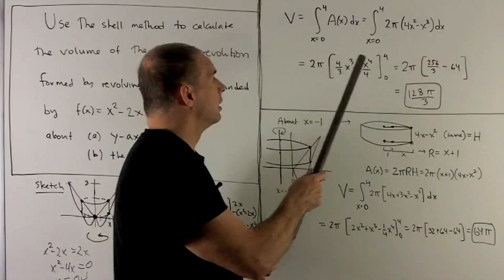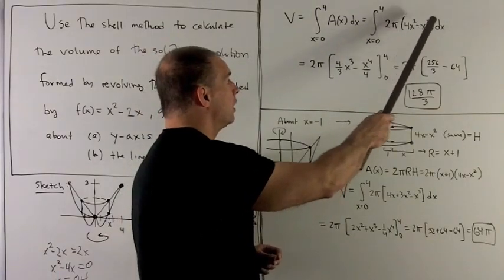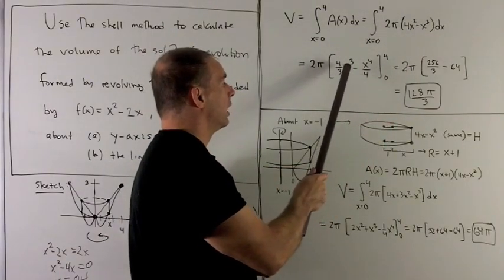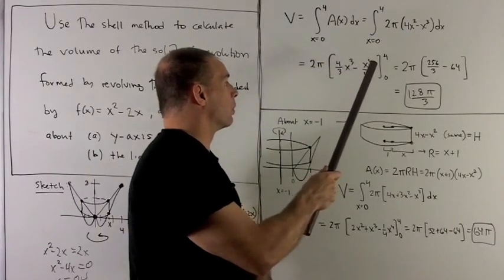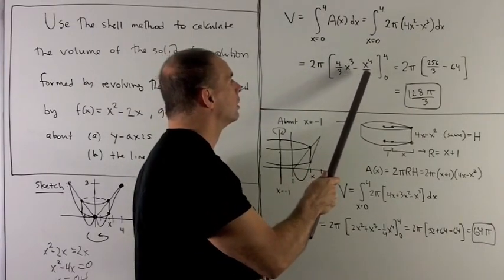2π comes out in front. We add 1, flip it over. Add 1, flip it over. Gives me 4/3 x³ - x⁴/4.